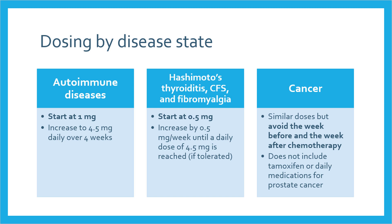Depending on the disease state, patients may be started on different doses. For most autoimmune diseases, prescribers will start at 1 or 1.5 milligrams and increase to 4.5 milligrams over 4 weeks. For Hashimoto's thyroiditis, chronic fatigue syndrome, and fibromyalgia, the starting dose is usually lower at 0.5 milligrams and titration may be over a longer period. For cancer, the dosing is similar, but it is important to avoid taking LDN the week before and the week after chemotherapy.